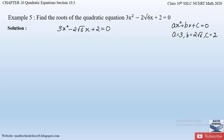To split the middle term, the product is AC = 3 × 2 = 6. We take the sum since the sign of C is positive — if C were negative, we would take the difference. So the sum must equal B = 2√6. We need to find factors of 6 such that their product is 6 and their sum is 2√6.